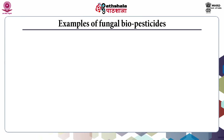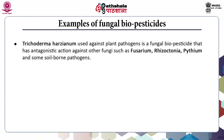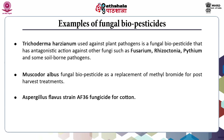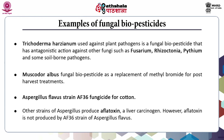Fungal biopesticides require optimum conditions for proliferation such as cool temperature and humid soil. Examples of fungal biopesticides include: Trichoderma harzianum, used against plant pathogens, which has antagonistic action against other fungi such as Fusarium, Rhizoctonia, Pythium and some soil-borne pathogens. Muscodor albus is a fungal biopesticide used as a replacement of methyl bromide for post-harvest treatments. Aspergillus flavus strain AF36 is used as a fungicide for cotton. Other strains of Aspergillus produce Aflatoxin, which is a liver carcinogen; however, Aflatoxin is not produced by the AF36 strain.